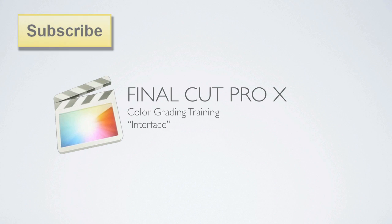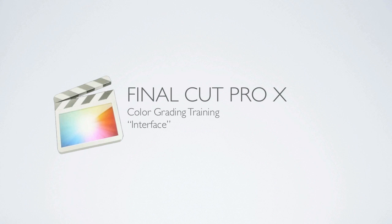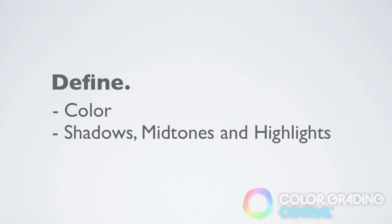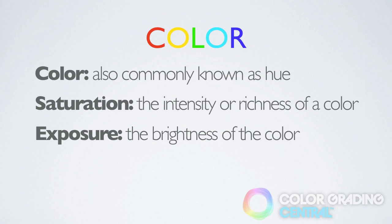Hi, my name is Denver Riddle of Color Grading Central and in this tutorial video I'm going to be covering the interface of the color board of Final Cut Pro X so that we can become more familiar with its function. But before we dive right into the color board and its interface, let's establish a couple things. The first is how we'll define color for the purposes of color correction in Final Cut Pro X. The second is defining shadows, mid-tones and highlights. These are the regions of the image that we can make targeted adjustments to via the color board. So let's begin with defining color.